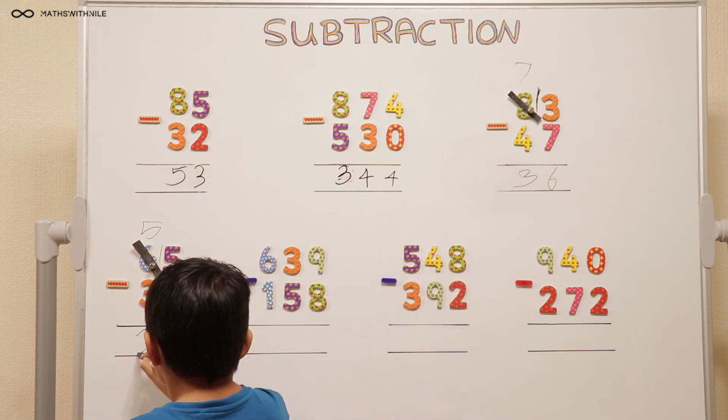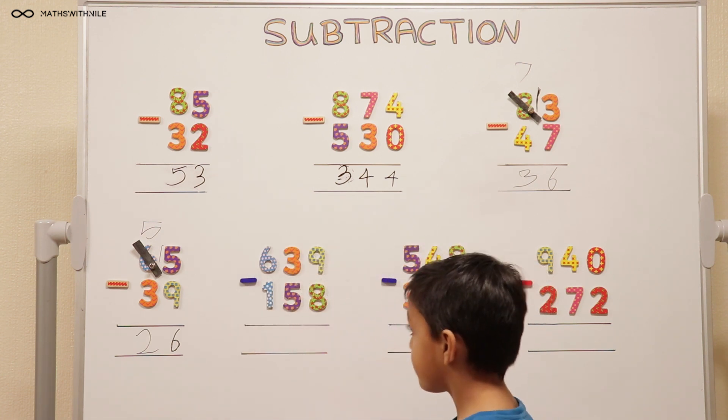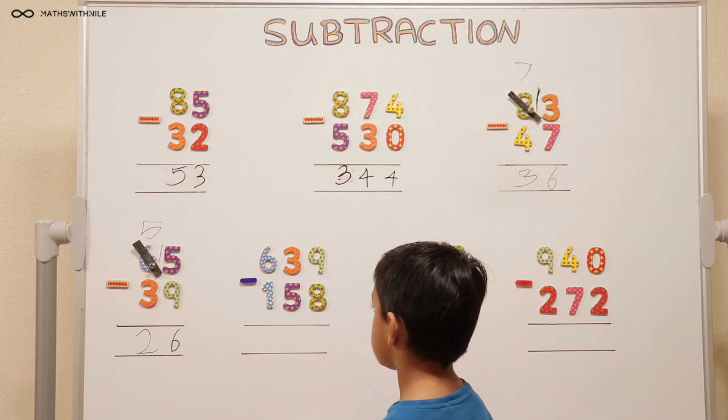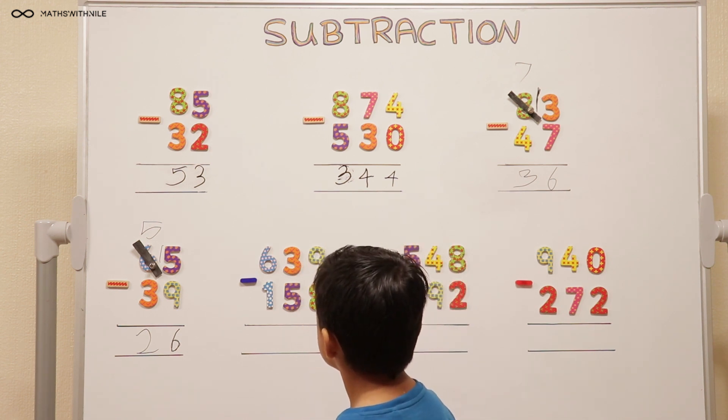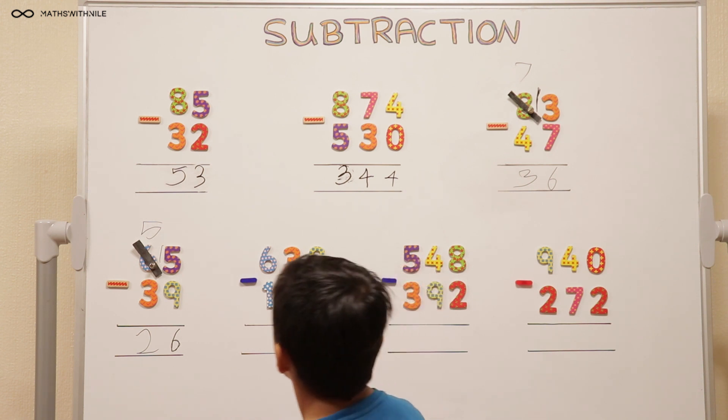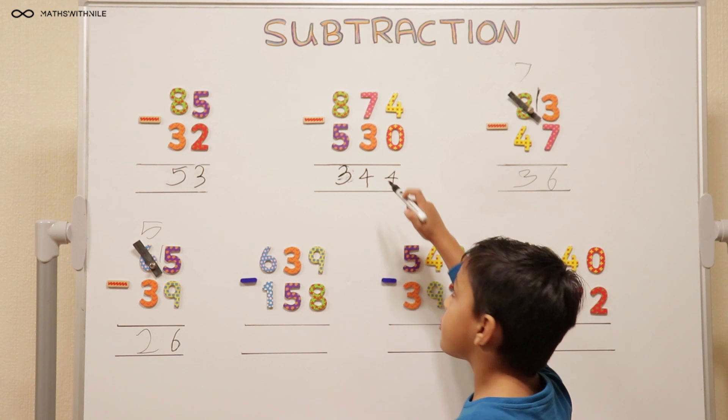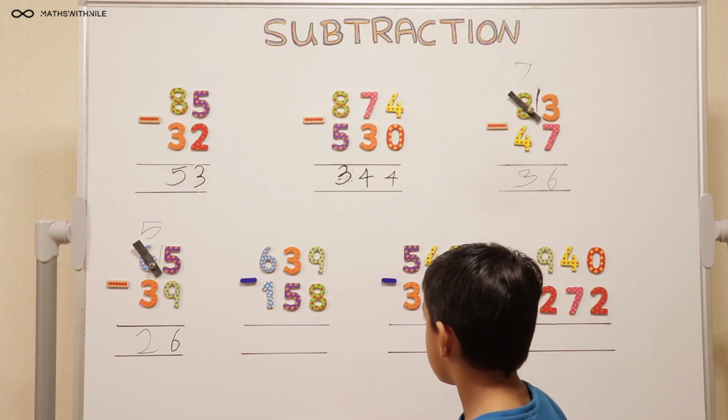So the answer is 26. Good job, Niall. Let's go to the other question. What's the difference with this question than the last one? We have an extra column, don't we? Yeah, we have hundreds in this one. Thank you for pointing that out.